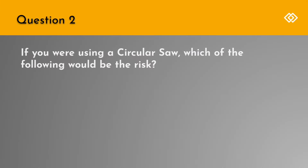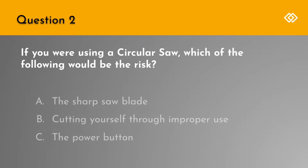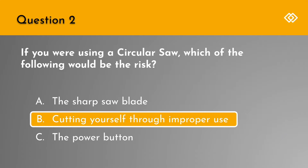Question 2. If you were using a circular saw, which of the following would be the risk? A. The sharp saw blade. B. Cutting yourself through improper use. Or C. The power button. The correct answer is B. Cutting yourself through improper use.